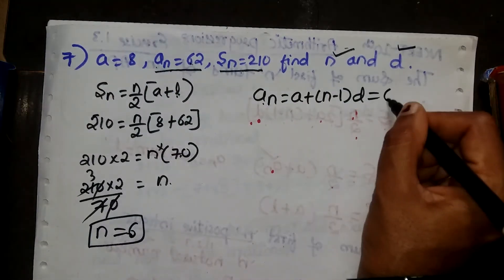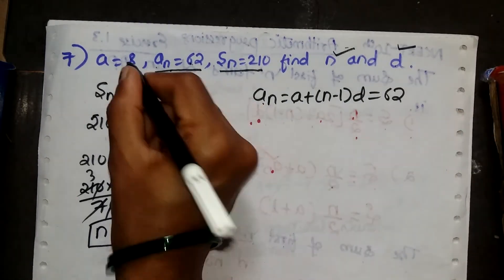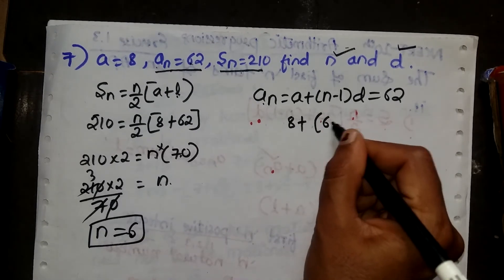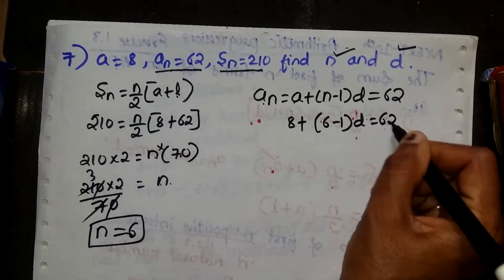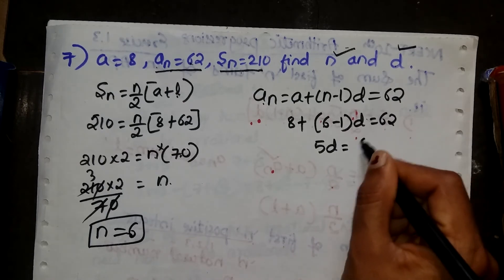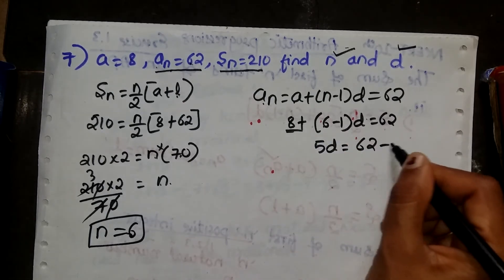We know an is 62. A is 8 plus (6 minus 1) into d equals 62. So 5d equals 62 minus 8, which means 5d equals 54.